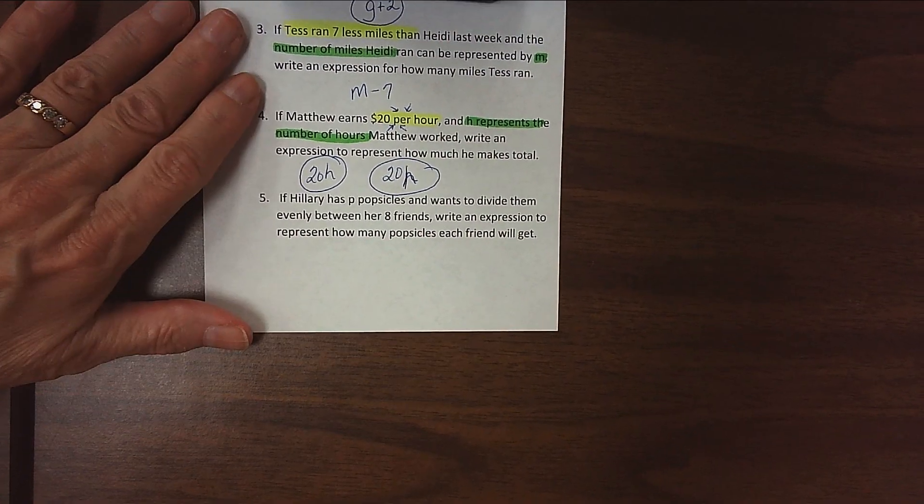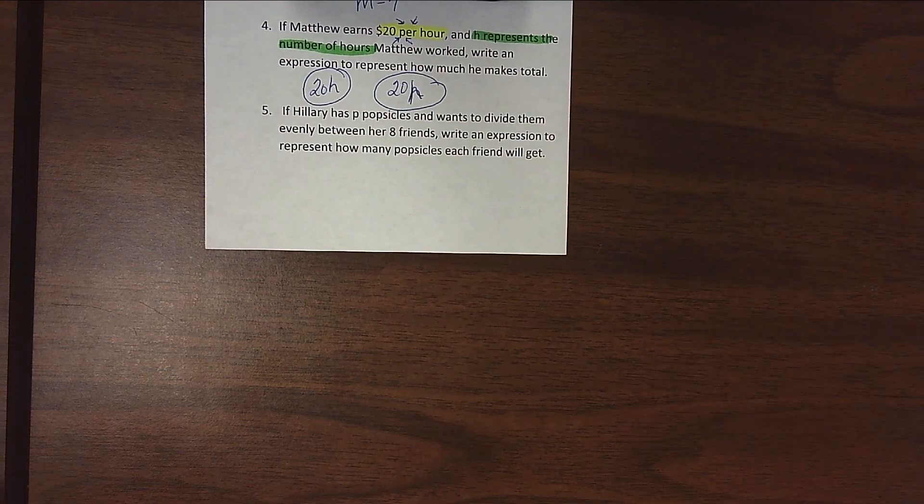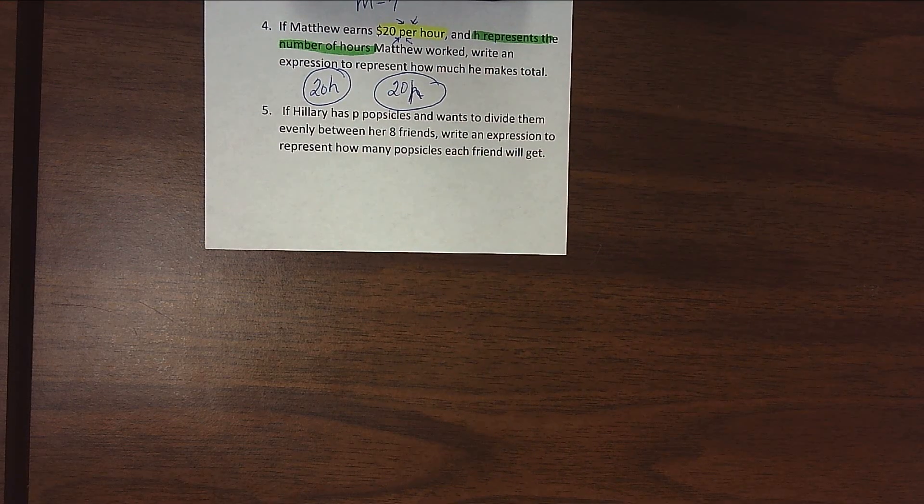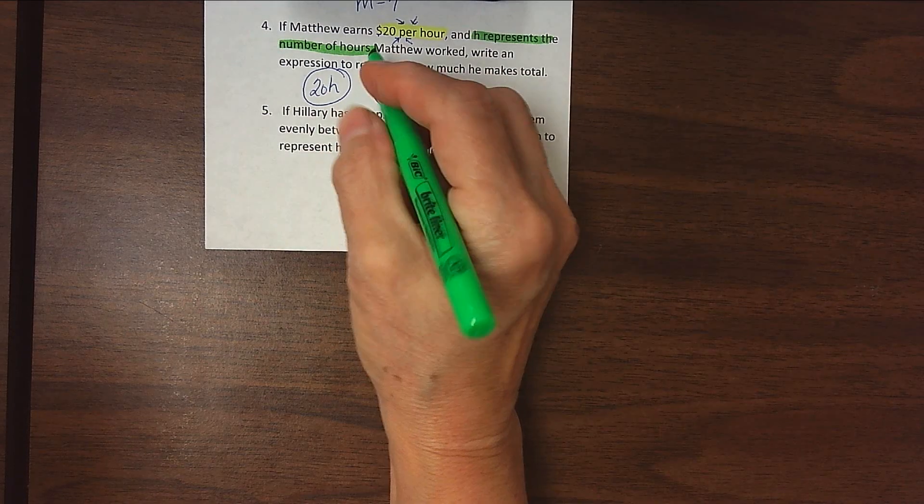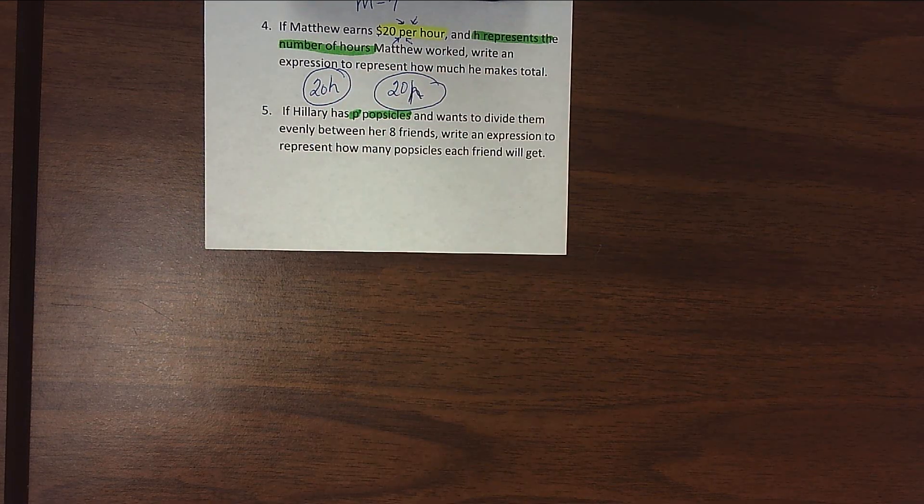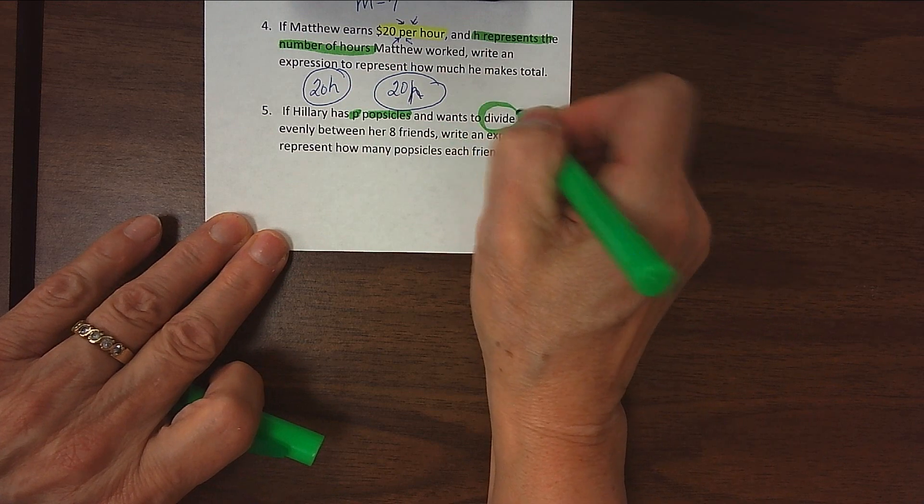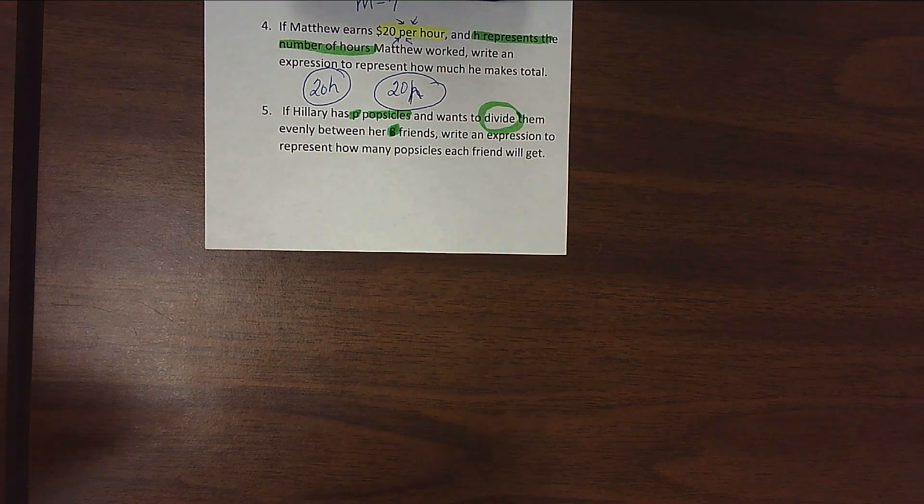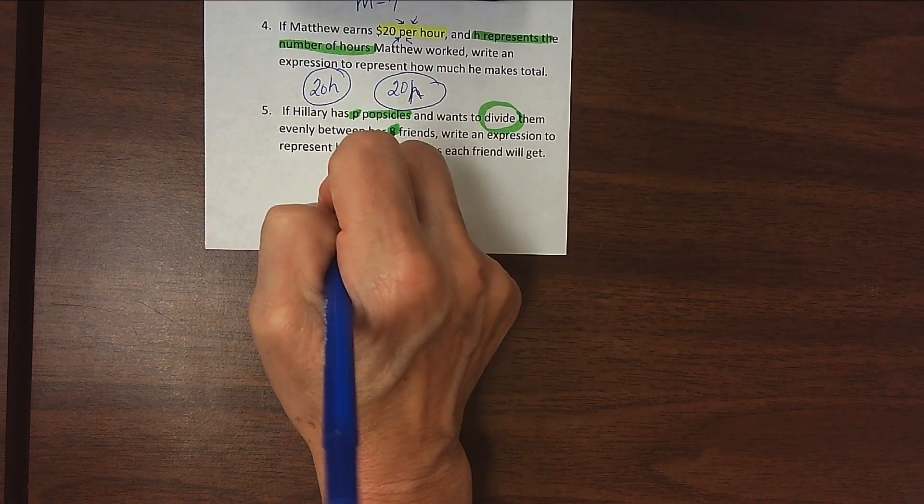If Hillary has P popsicles and wants to divide them evenly between her eight friends, write an expression to represent how many popsicles each friend will get. So we see that Hillary has P popsicles, so P represents the number of popsicles that Hillary has. And we see that she wants to divide them, so that should be a huge clue for us, between her eight friends. So we want to take the number of popsicles she has, and we want to divide them by eight.